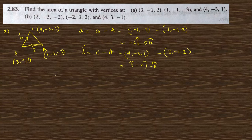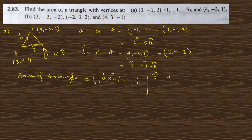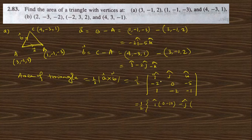The area of the triangle is half the magnitude of a cross b. We need to find a cross b using the determinant with i cap, j cap, k cap. The coefficients of a are (−2, 0, −5) and of b are (1, −2, −1). Expanding: i cap (0·(−1) − (−5)·(−2)) − j cap ((−2)·(−1) − (−5)·1) + k cap ((−2)·(−2) − 0·1). This gives i cap(0 − 10) − j cap(2 + 5) + k cap(4 − 0).